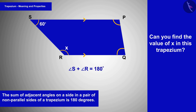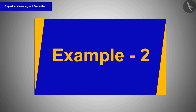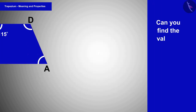We can say that the sum of angle S and angle R will be 180 degrees. From the question, the value of angle S is 60 degrees. Thus the sum of x and 60 degrees equals 180 degrees, giving us x equals 180 degrees minus 60 degrees, which is 120 degrees.